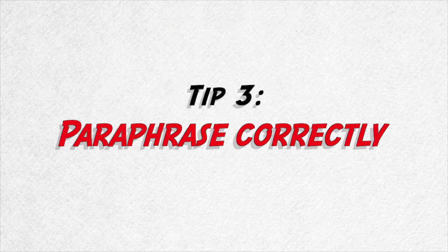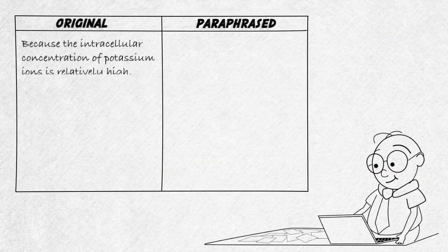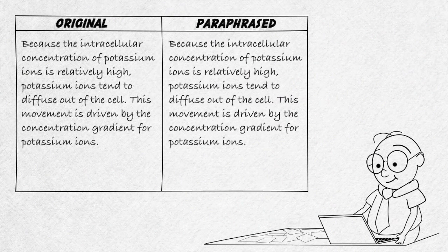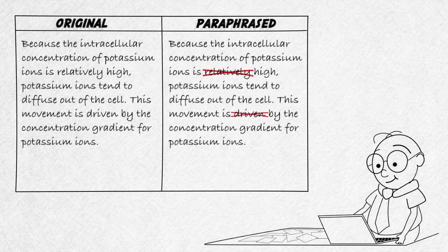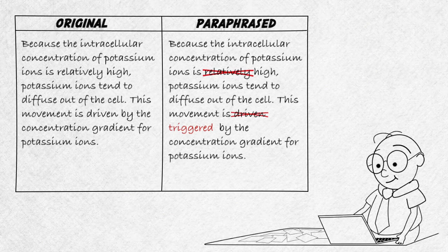Paraphrase correctly. In scientific writing, you cannot usually use quotes. You need to paraphrase and summarize the writing of other authors. But watch out! Only changing a few words here and there is also considered plagiarism.